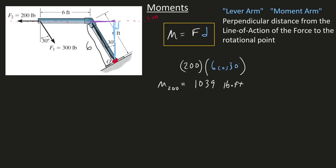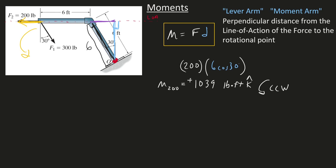Now for the direction: imagine putting this force on this object — it wants to rotate counterclockwise. So I write counterclockwise direction. Using my right hand, I curl my fingers in that counterclockwise direction and my thumb points out of the page, making this in the positive Z direction.